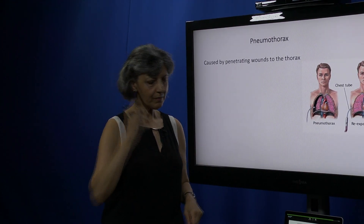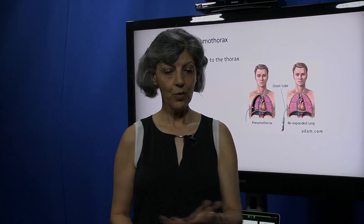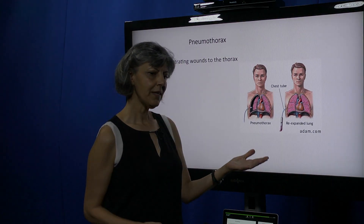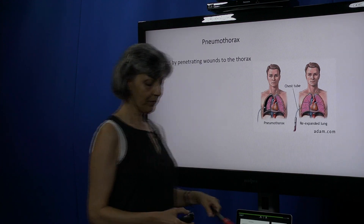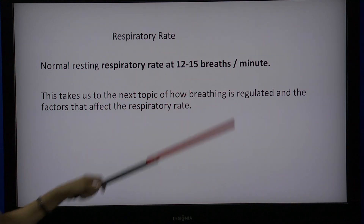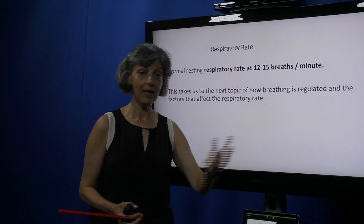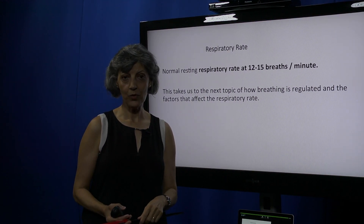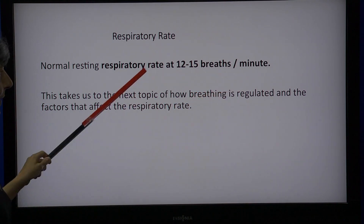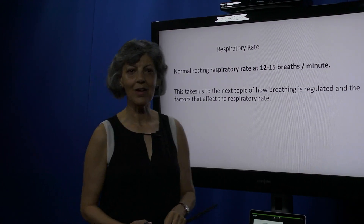To summarize, we have discussed the process of ventilation — how air enters and leaves the lungs — and the factors that can affect airflow. We breathe at a rate of 12 to 15 breaths per minute, taking in around 500 mL of air with each breath. How we regulate this respiratory rate will be discussed in the next topic: respiratory regulation.